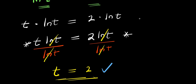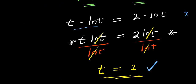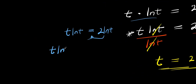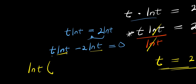The second method: I keep t ln t equals 2 ln t, and I move the 2 ln t over to get t ln t minus 2 ln t equals 0. There is ln t in both terms, so I can factor that out: ln t times (t minus 2) equals 0.